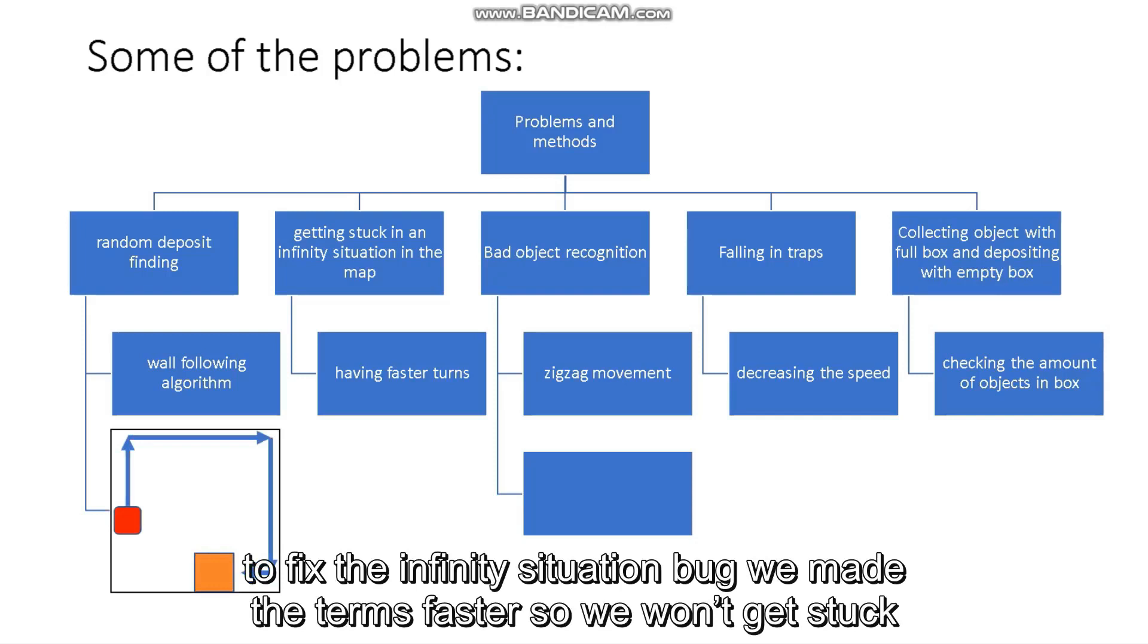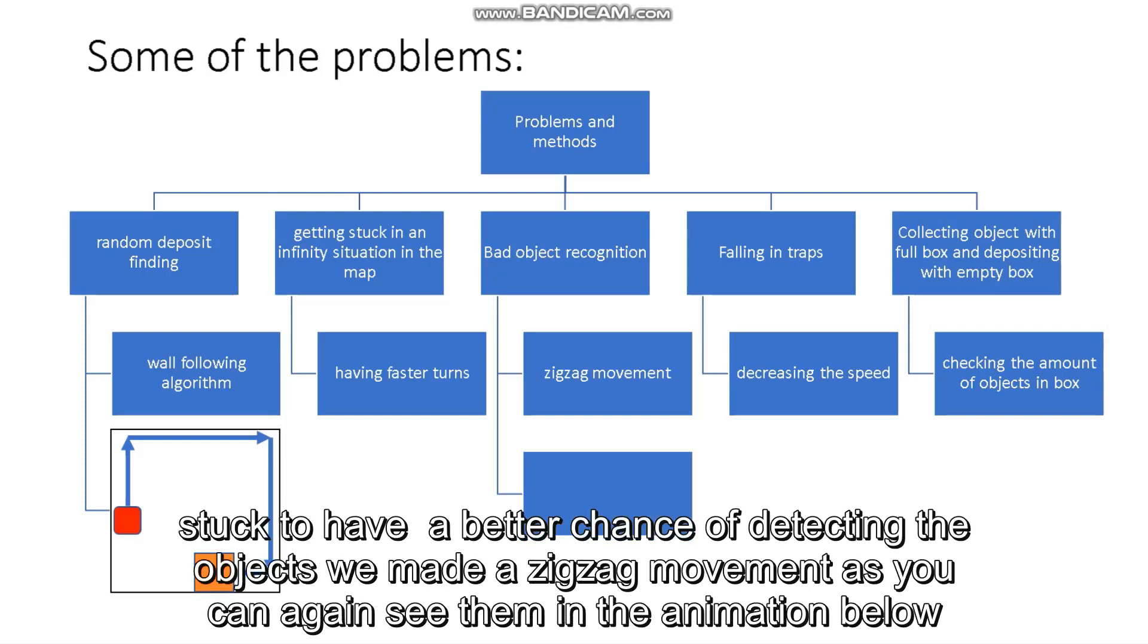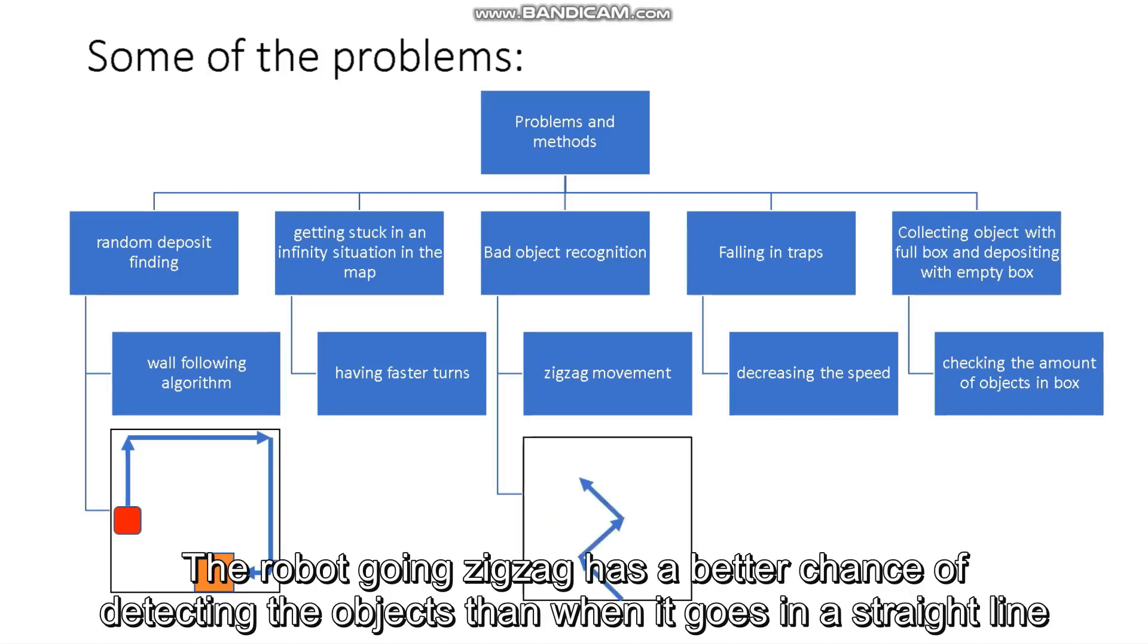To fix the infinity situation bug, we made the turns faster so we won't get stuck. To have a better chance of detecting the objects, we made a zigzag movement, as you can again see in the animation below. The robot going zigzag has a better chance of detecting the objects than when it goes in a straight line.